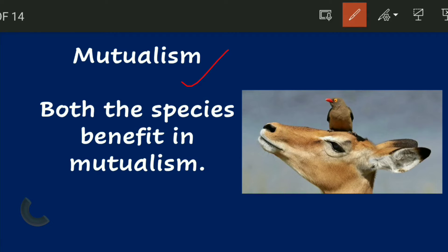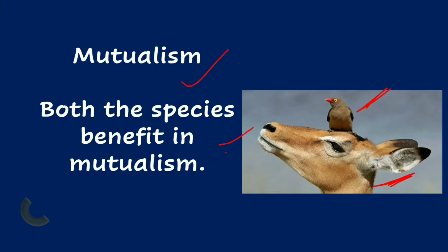The first type is mutualism, which is a symbiotic association. What happens in mutualism? Both species benefit. For example, a bird sitting on an animal eats the germs or bacteria on the animal's body. The bird gets food and the animal also benefits. Both are benefited — so the relationship is mutualistic.